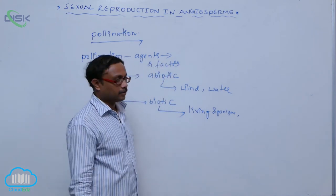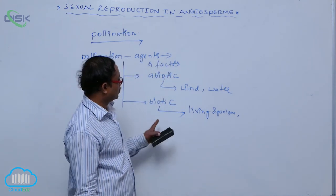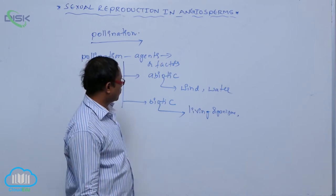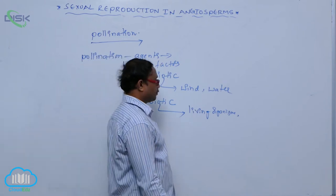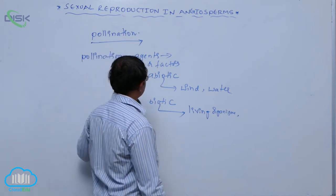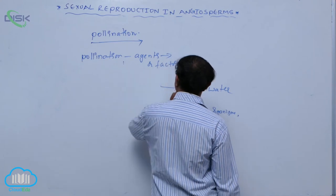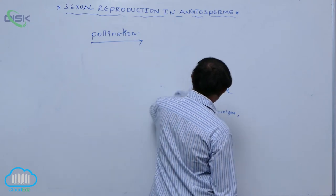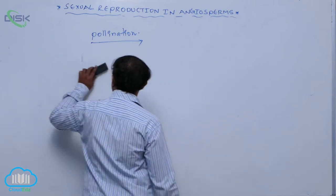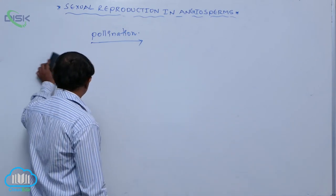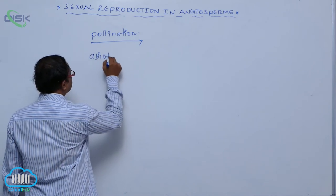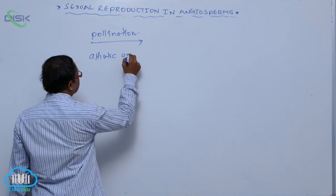Biotic agents include living organisms such as insects, birds, and other organisms involved in cross-pollination. The most common method of abiotic pollination is known as wind pollination, also called anemophily.